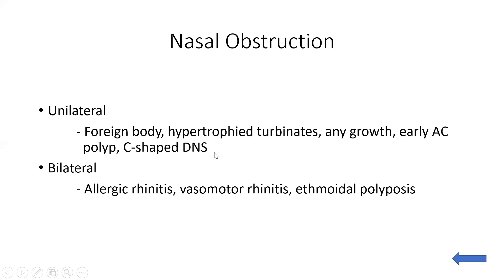C-shaped DNS causes unilateral nasal obstruction because the deviation is only in one plane. However, if there is a long-standing DNS, it will lead to compensatory hypertrophy of the opposite inferior turbinate, and then it can lead to bilateral nasal obstruction. But initially in DNS, there is unilateral nasal obstruction.